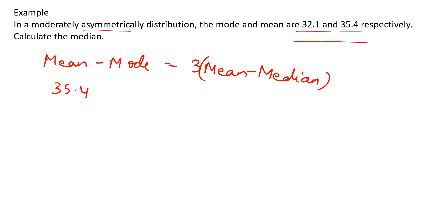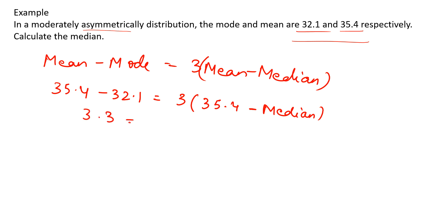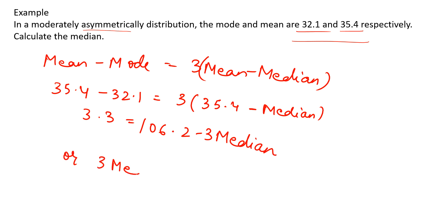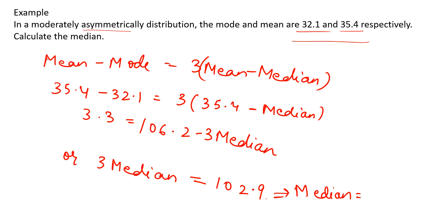Applying the relation: 35.4 minus 32.1 equals 3 times (35.4 minus median). So 3.3 equals 106.2 minus 3 median. Rearranging, 3 median equals 102.9, which gives median equals 102.9 divided by 3, which is 34.3. This is how we use the empirical relation to find the missing value when two of the three measures are given.